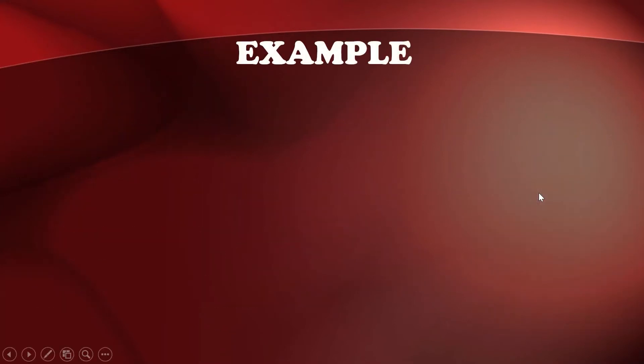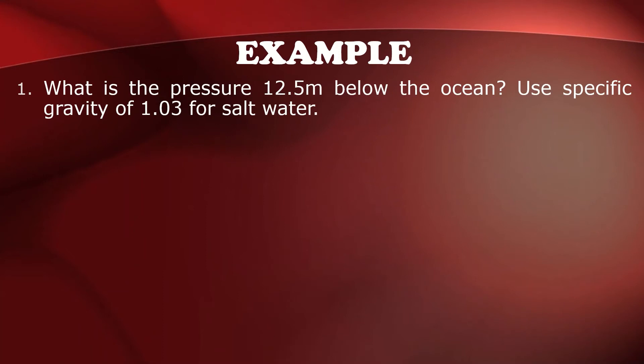And so for example, we are going to solve the pressure 12.5 meters below the ocean. And we are going to use specific gravity of 1.03 salt water, given H is 12.5 meters and the specific gravity of 1.03. And so we are going to use the formula P is equal to specific weight times height.